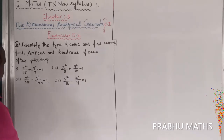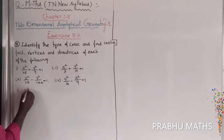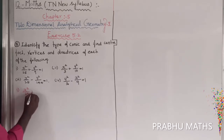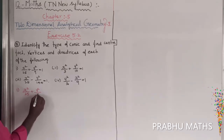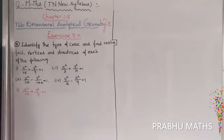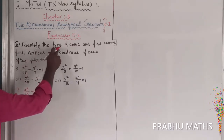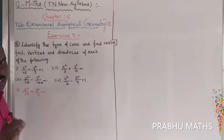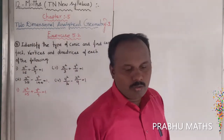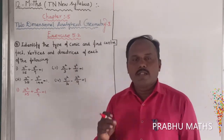The first subdivision: x squared divided by 25 plus y squared divided by 9 equals 1. That is the first subdivision. The first type means x squared by a squared plus y squared by b squared is equal to 1. That is the first type.